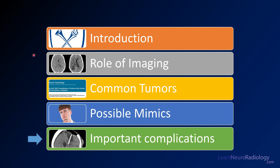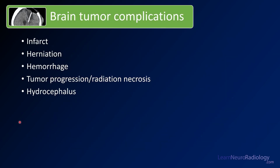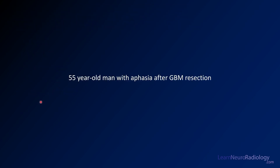We've talked about the role of imaging in the emergent brain tumor setting and some of the common tumors and mimics. Today we're going to talk about complications that you should be on the lookout for, particularly in patients who come in with known brain tumors. Many of the things you need to worry about are common: infarct, herniation or significant mass effect, hemorrhage, tumor progression, radiation necrosis, and acutely worsening hydrocephalus — something you must be aware of and report on these patients.